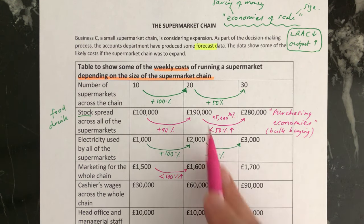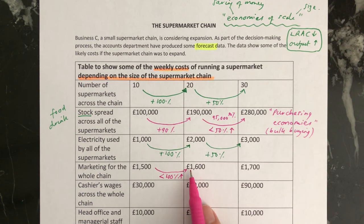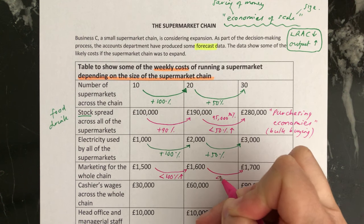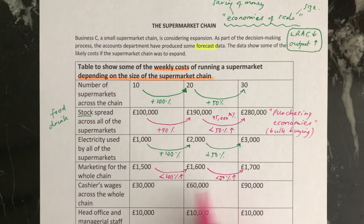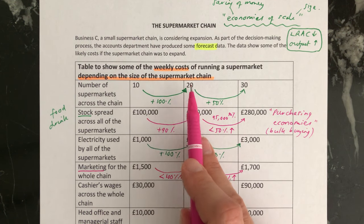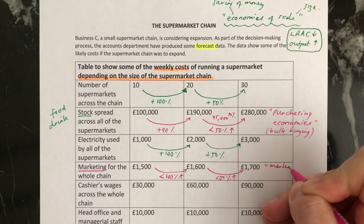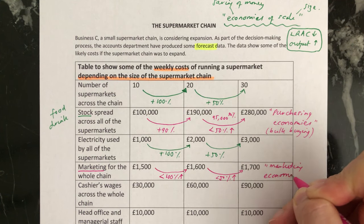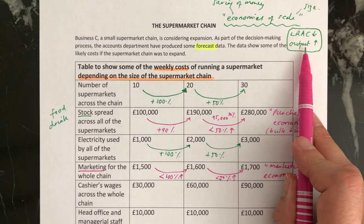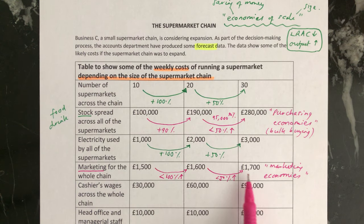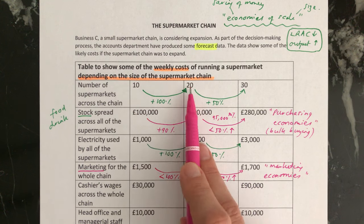Looking at the next scenario, if you have 30 shops — so you've got a 50% increase in shops — you can see that the marketing doesn't increase by 50%, it just goes up by £100 again, which is less than a 50% increase. So what you can see happening with marketing is that when you increase your output because you've got more supermarkets operating within your chain, your increase in costs is proportionally less, and therefore your cost per unit is falling. These we call marketing economies, because as your output goes up the cost per unit will go down — your long-run average costs fall because your marketing costs are being spread over more and more units, while only increasing a small amount.